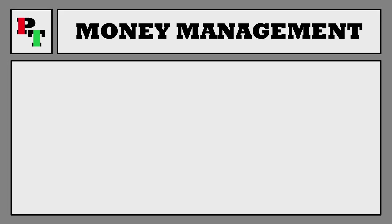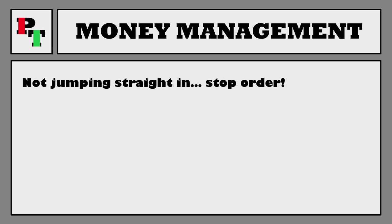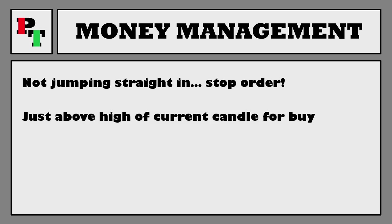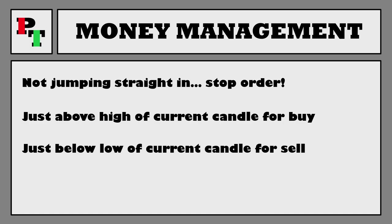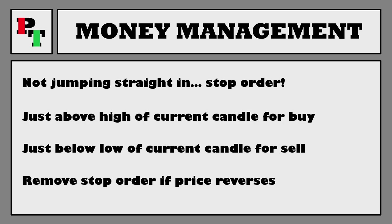Let's establish those money management rules. If we do get an entry signal, we're not actually going to jump straight into it. Instead we're going to set our trade as a stop order, meaning we'll place the order at a price which will enter us into the trade if price gets to that level. For a buy signal, we'll put the stop order just above the high of the current candle — a final check on whether the trend is actually happening. For a sell trade signal, we'll simply place our stop order just below the low of the current candle. If price backs away and goes over our would-be stop loss level, we will cancel the stop trade.